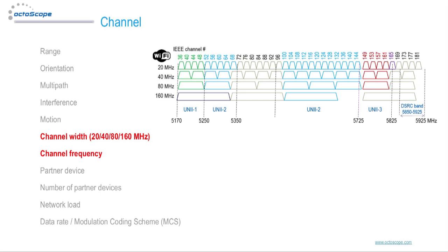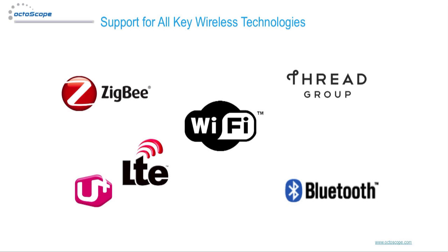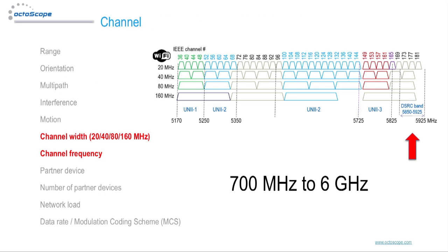Almost all test metrics vary with channel frequency and channel width. The Octobox testbed is broadband, supporting a frequency range from 700 MHz to 6 GHz, allowing you to sequence through channel frequency and channel width settings while obtaining performance and behavior measurements. The wide Octobox frequency range accommodates practically all cellular, Wi-Fi, and other unlicensed services. Octobox also supports the Automotive Direct Short Range Communications, or DSRC, band.